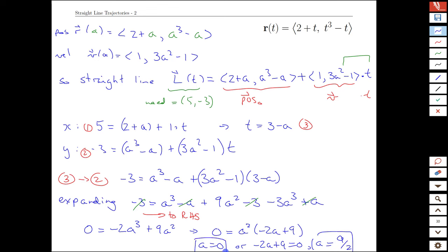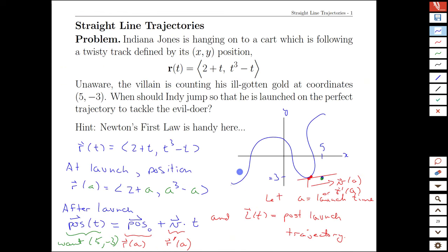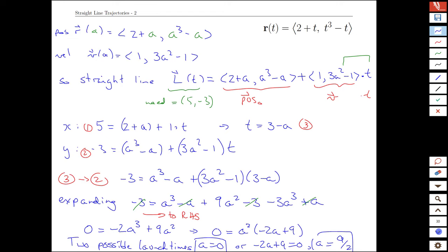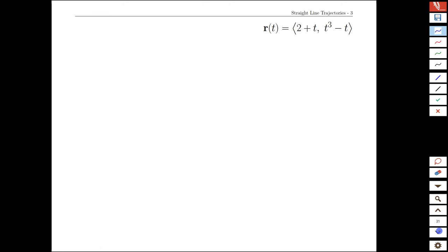All right. So these are the two launch times, two possible launch times. So in some sense, we might be done. In fact, we actually are done in the sense that we found two points where if we launch at that location, the straight line that's tangent to that point on the curve will go through the target (5, -3). We set up the math to solve for that. So in some sense, we should be good.